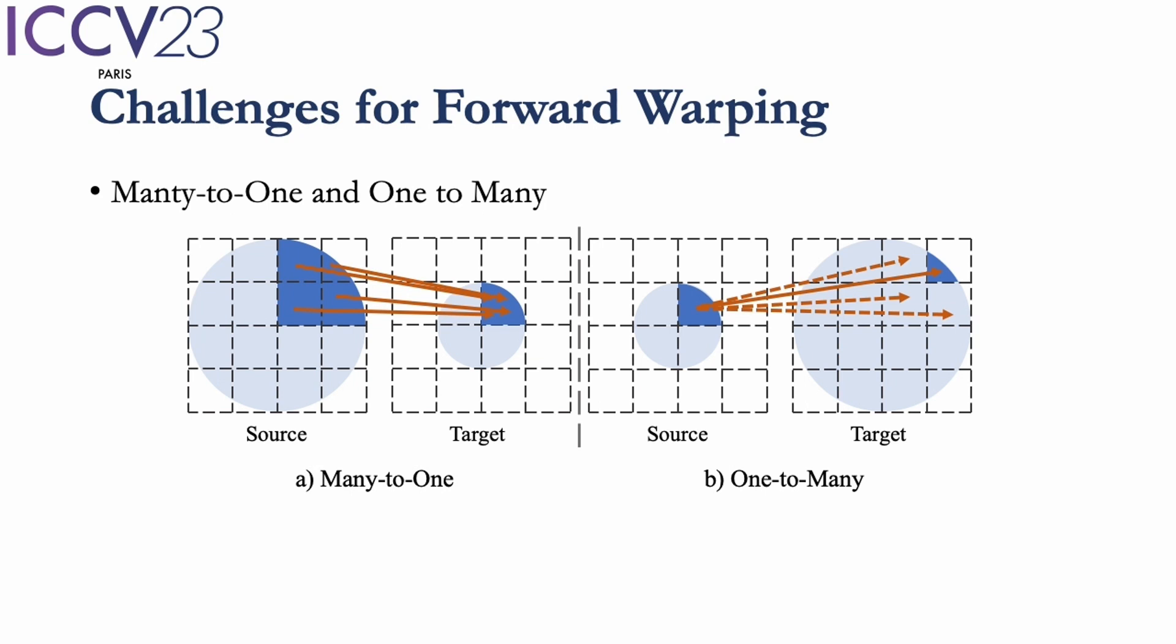The second is the one-to-many issue, as shown in the right figure. Once the object expands, one source pixel could correspond to multiple pixels in the target image. However, one source pixel has only one forward flow, which means we could only warp it to one position in the target image, leaving others as empty holes.